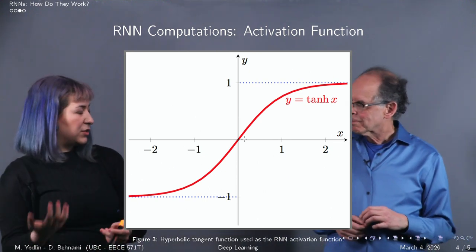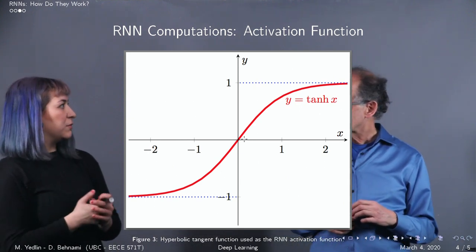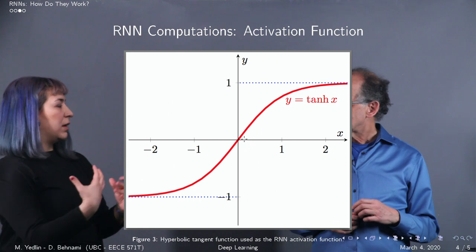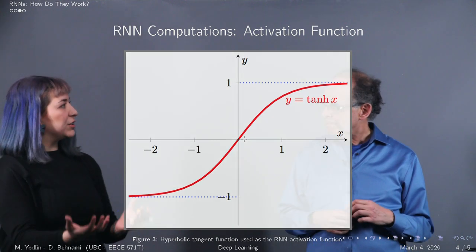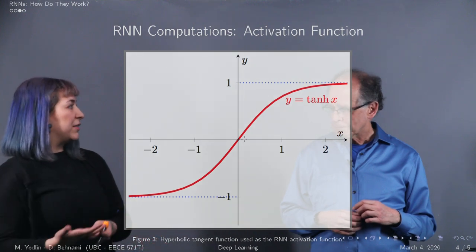So as you said, tanh, because of the way it's bounded, its first and second derivative, it's a good fit for sort of addressing the problem of vanishing and exploding gradients. But there are other options that have that characteristic.